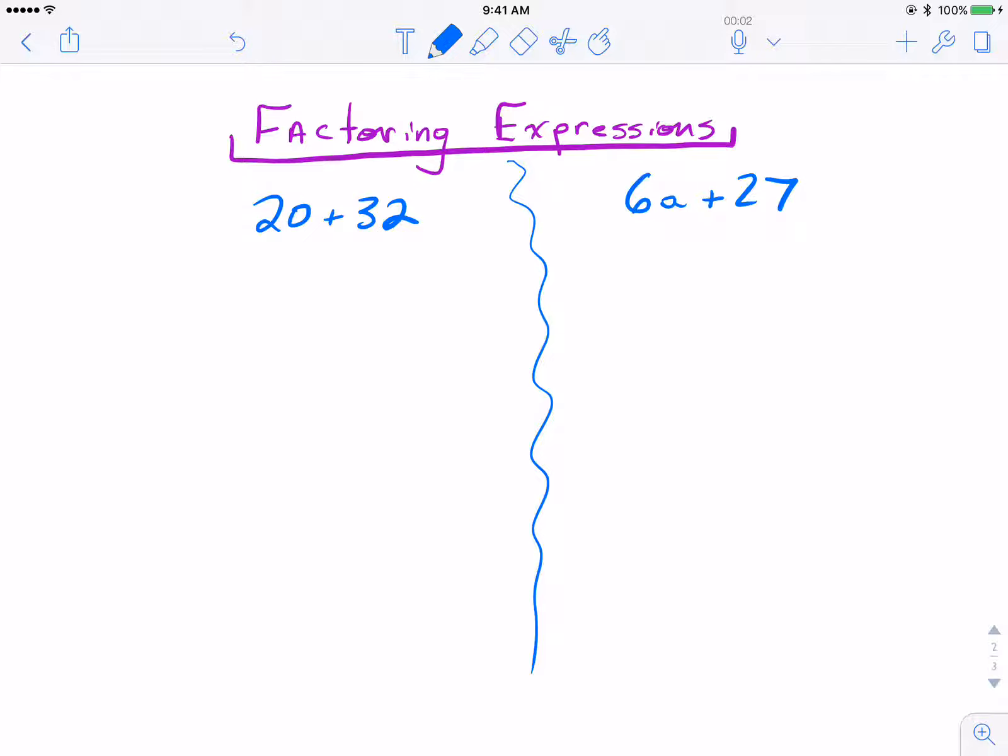Basically, it's a coded way of saying factor out a GCF, kind of like the reverse of the distributive property. So we're going to take a look at two different examples here.